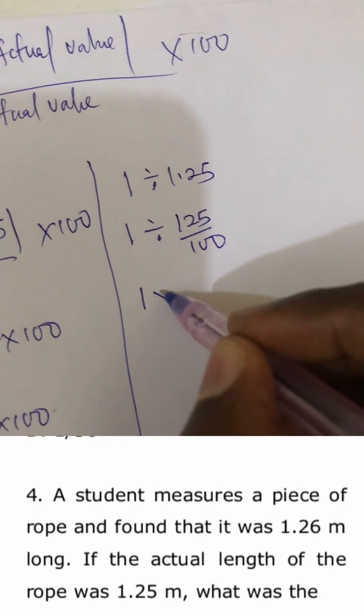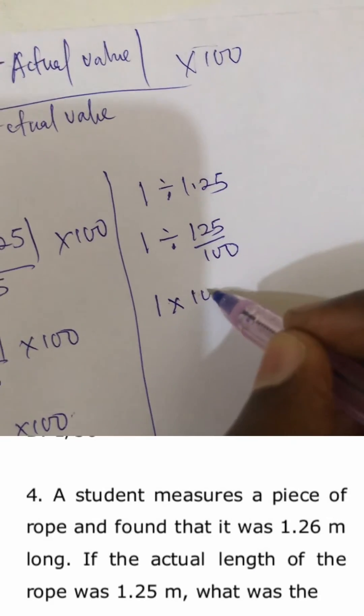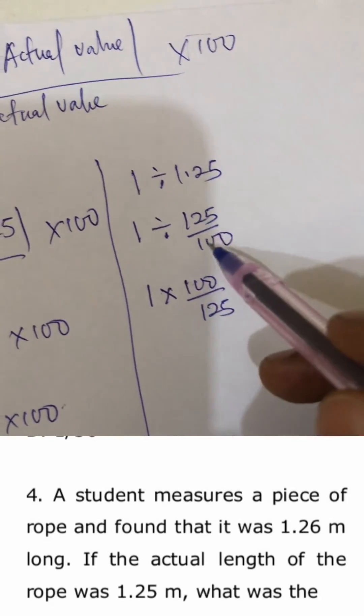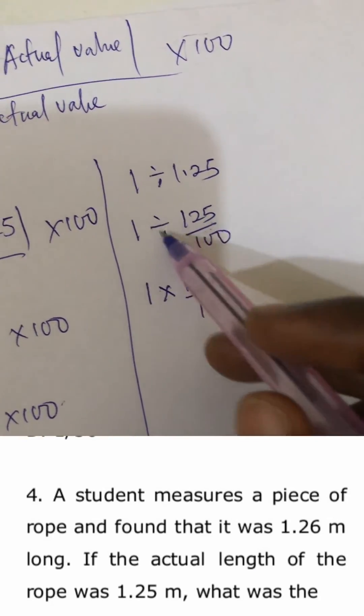Mathematically you agree with me that this is the same as 1 times 100 over 125. That means we found the reciprocal of this when this turns to multiplication.